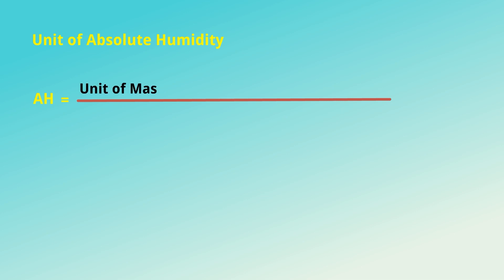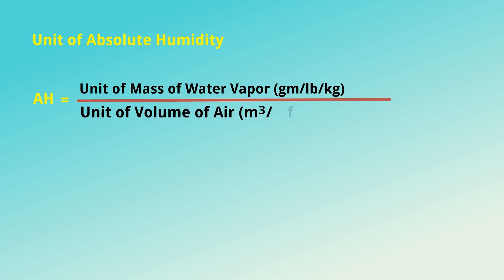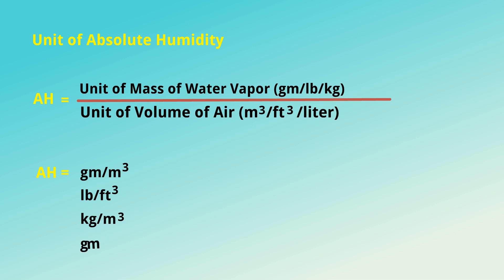The unit of absolute humidity equals the unit of mass of water vapor — which can be grams, pounds, or kilograms — divided by the unit of volume of air — which can be meter cubed, feet cubed, or liters. So the resulting units are grams per meter cubed, pounds per feet cubed, kilograms per meter cubed, grams per liter, or milligrams per liter.